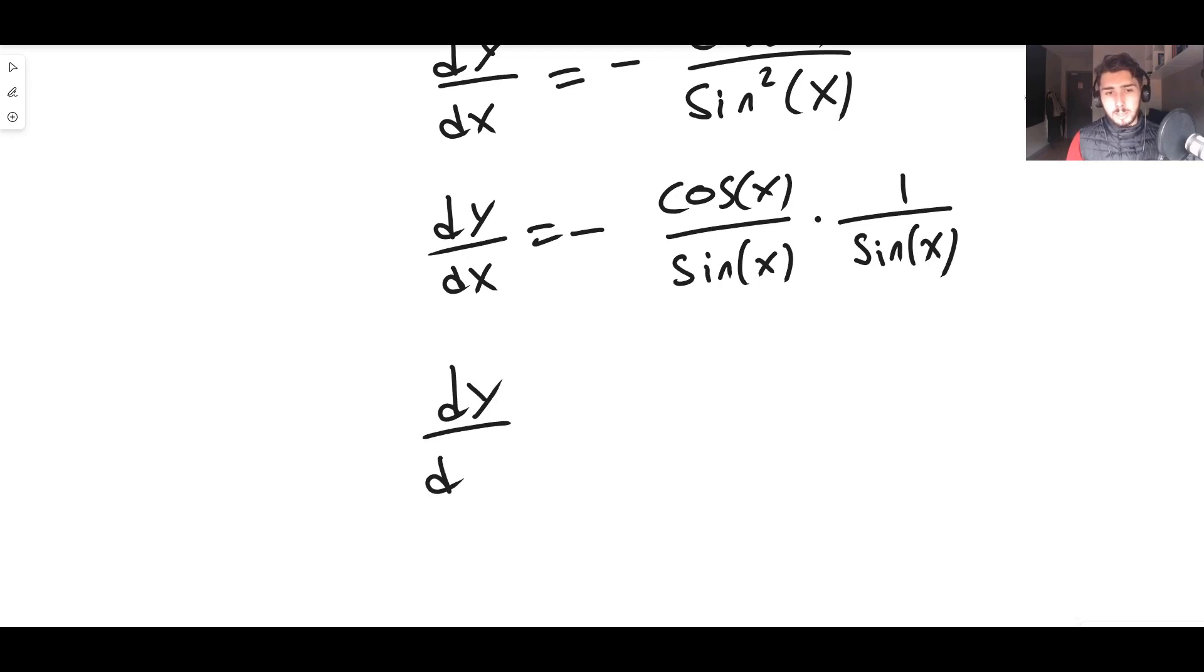It's cot, so we have minus cot(x) multiplied by 1 over sin(x), which is cosec(x).